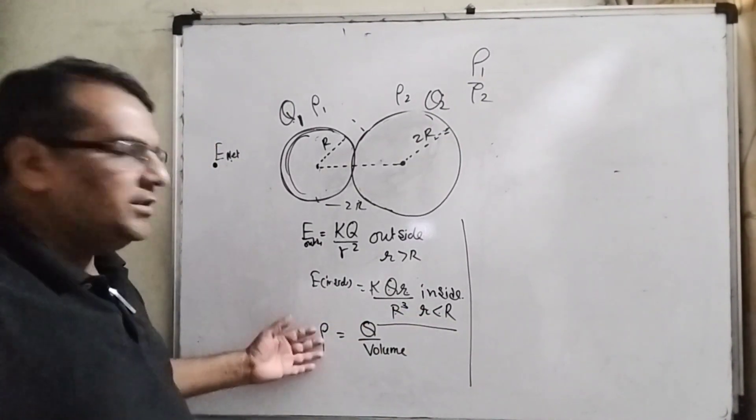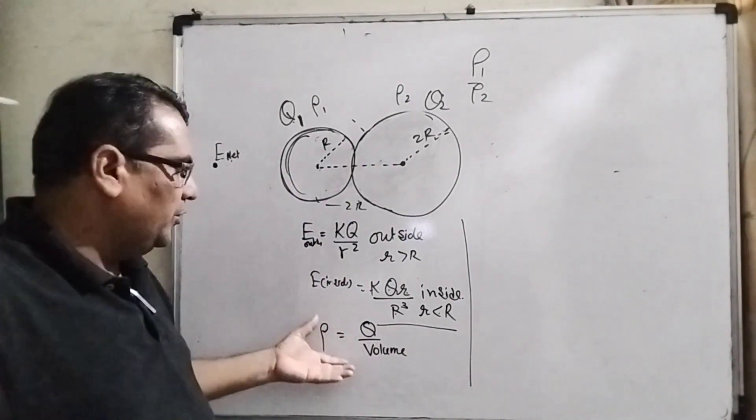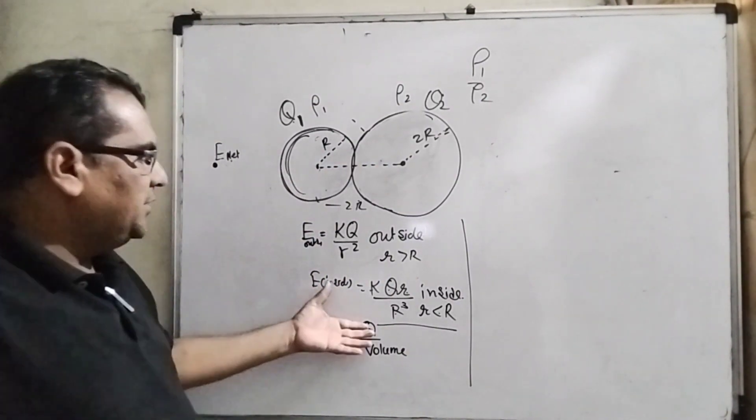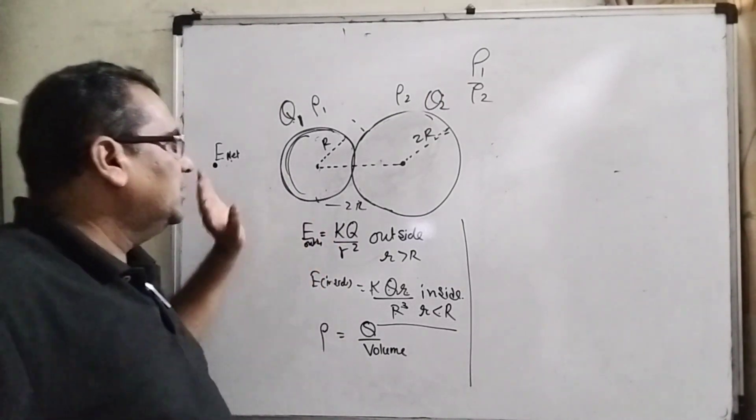Here this r is smaller than R, and charge density. As you know that here volumetric, you have a sphere. So you can use charge density q by volume. These three formulas we can use in this question.